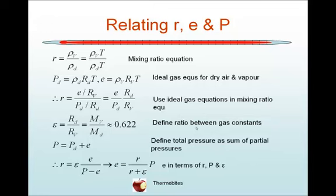Now we can define a ratio between the gas constants: epsilon is equal to Rd over Rv. And because the equations for the specific gas constants involve the universal gas constant divided through by the molecular weight of the particular constituent, epsilon may be written as the molecular weight of vapour over the molecular weight of dry air, which is about 0.622.